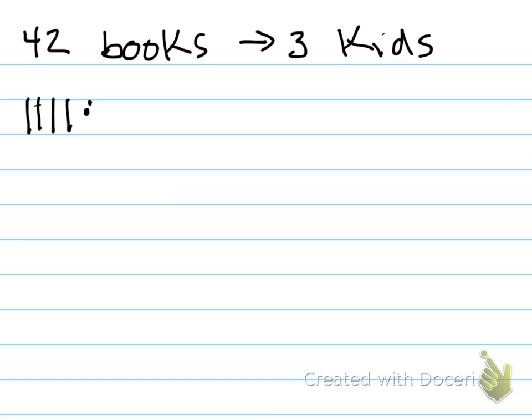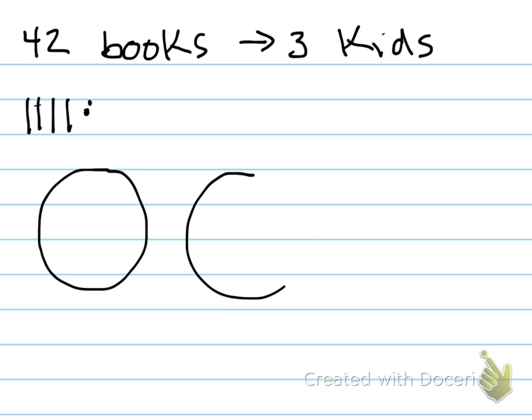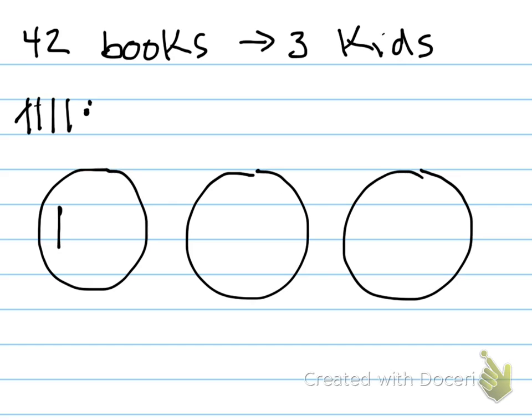Since we have three kids, that's going to be our divisor. We need to make three circles — those represent the three kids. So now we have to divide up the books into these three circles. Let's start by giving out the tens. Cross out one ten and put it in the first circle, cross out another and put it in the second, cross out another and put it in the third. We have one ten left for three circles.